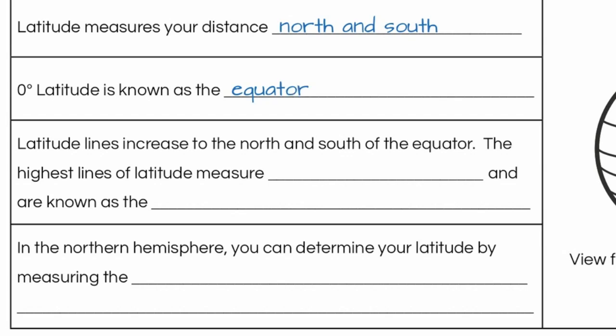Latitude lines increase to the north, and they increase to the south. When you travel north and south of the equator, your latitude gets higher. The highest lines of latitude are going to be 90 degrees north and 90 degrees south. And these are known as the poles, the north and south pole. So while longitude increases to 180 degrees, latitudes only go up to 90 degrees.